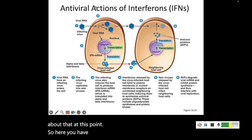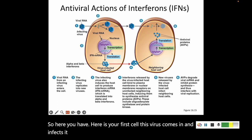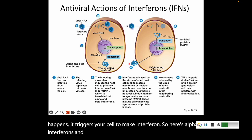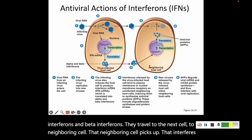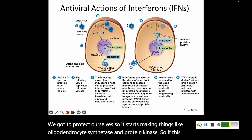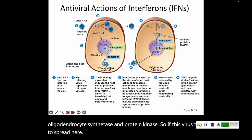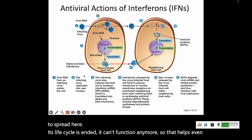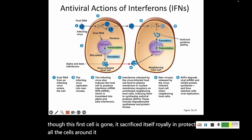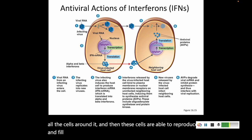Here is your first cell. A virus comes in and infects it, starts making lots of baby viruses. But when that happens, it triggers your cell to make interferon — alpha interferons and beta interferons. They travel to the neighboring cell, which picks up that interferon and says we've got to protect ourselves. So it starts making oligoadenylate synthetase and protein kinase. If the virus tries to spread there, its life cycle has ended — it can't function anymore. Even though the first cell is gone, it sacrifices itself in protecting all the cells around it, and those cells are able to reproduce and fill in the gap from the cells that were infected.